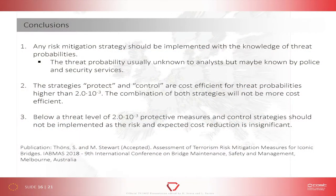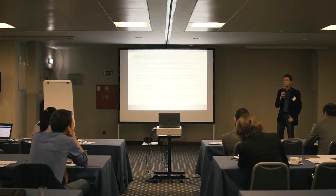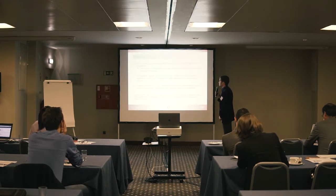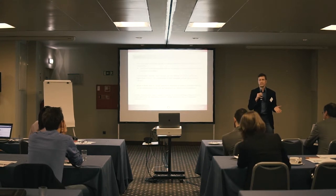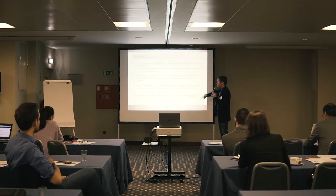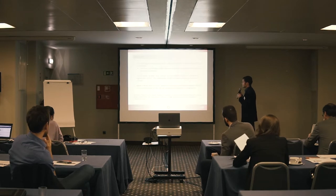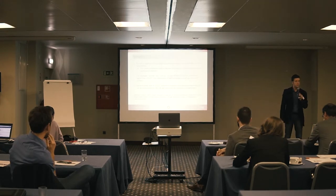The conclusions are: any risk mitigation strategy should be implemented with knowledge of the threat probabilities, so there must be an interface to someone who knows them. The protect and control strategies are cost-efficient for threat probabilities higher than 2×10⁻³. Below 10⁻³, no protective measures or control strategies should be implemented. This is described in more detail in a publication for ERPASS in Melbourne this year.